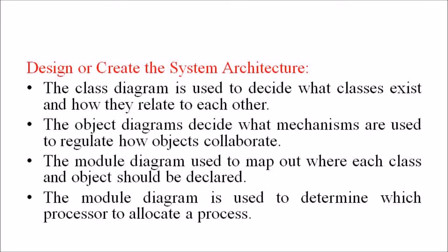In the third step, that is design or create the system architecture, the class diagrams are used to decide what classes exist and how they relate to each other. The object diagram decides what mechanisms are used to regulate how the object collaborate and the module diagram used to map out where each class and object should be declared.